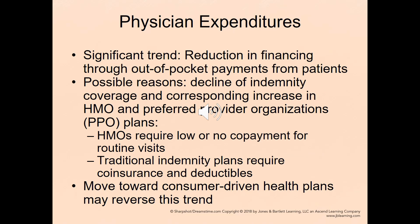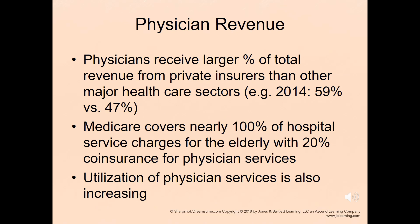A significant trend is the reduction in financing through out-of-pocket payments from patients. Possible reasons include the decline of indemnity coverage and the corresponding increase in HMO and PPO plans, where HMOs require low or no copayment for routine visits while traditional indemnity plans require coinsurance and deductibles. There is also a move toward consumer-driven health plans, which may reverse this trend. Physicians receive a larger percentage of total revenue from private insurers than other major healthcare sectors. Medicare covers nearly 100% of hospital service charges for the elderly with 20% coinsurance for physician services, and utilization of physician services is also increasing.